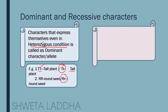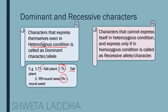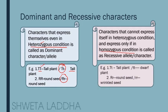Let us see what are recessive characters. Characters that cannot express themselves in heterozygous condition — they will express only if they are in homozygous condition — are called recessive characters or recessive alleles. For example, in heterozygous condition capital T small t, the small t represents dwarfness, but it is not able to express itself.